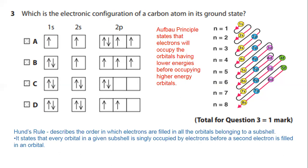To find the answer, we will have to look at Hund's rule. According to Hund's rule, every orbital in a given subshell is singly occupied by electrons before a second electron is filled in an orbital. Look at answer C. In answer C, you can see that one 2P orbital is double occupied before singly occupying all the 2P orbitals. So we can reject answer C.